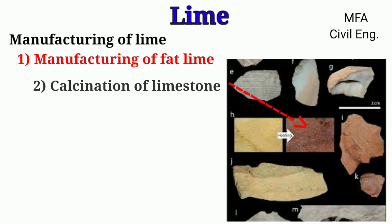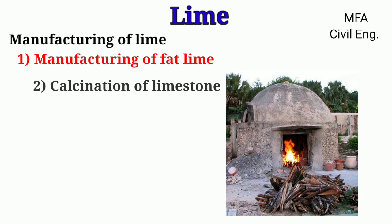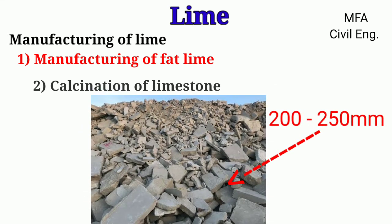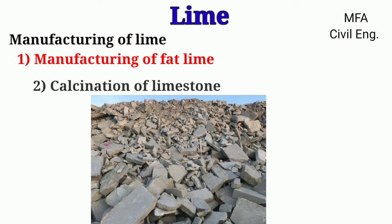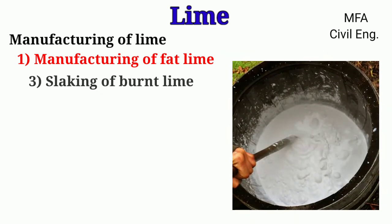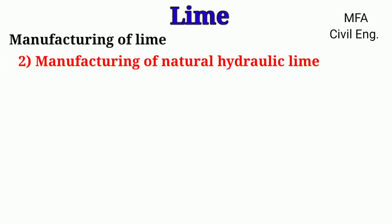If the color of limestone is bright red, it indicates complete burning. The dark red color shows the presence of carbon dioxide in the burnt limestone. Heating of limestone should be gradual; otherwise, sudden heating causes the stone to blow into small pieces. Fat limestone should be broken into lump sizes of 200 mm to 250 mm, and hydraulic limestone into lump sizes of 75 mm to 200 mm for proper burning. The quick lime obtained is slaked by two methods: slaking to paste and slaking to powder.